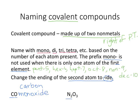For N2O3, there's two nitrogens, so that's dinitrogen. Notice I don't do anything to the word nitrogen except add di in front of it. And there's three oxygens, so that's trioxide. The ending is always in -ide.